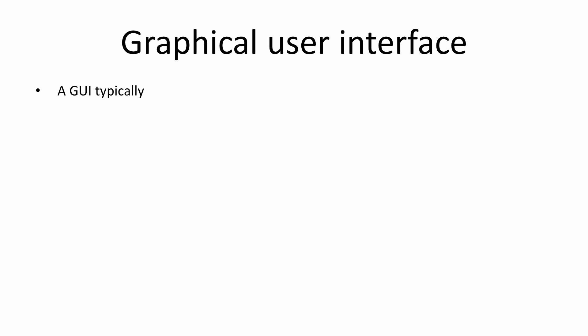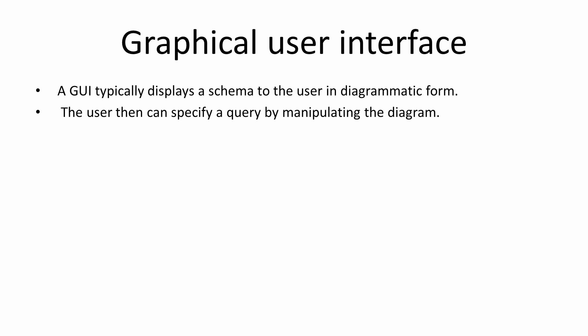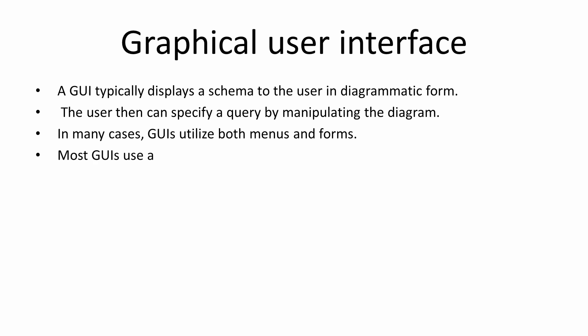Graphical user interface, or GUI, typically displays a schema to the user in diagrammatic form - essentially what you see on websites, phones, or apps today. The user specifies a query by manipulating the diagram on screen. In many cases, GUI utilizes both menus and forms, combining form-based and menu-based user interfaces together.